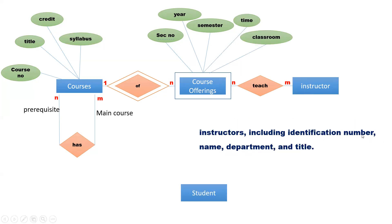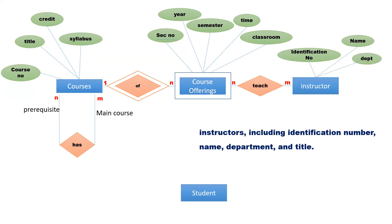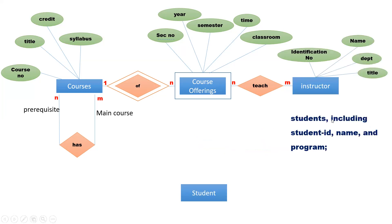The course offering can also have attributes timing and classroom. Instructors include identification number, name, department and title, so the attributes of the instructor are identification number, name, department and title. Students include student ID, name and program, so the attributes of student are student ID, name and program.